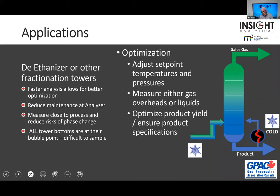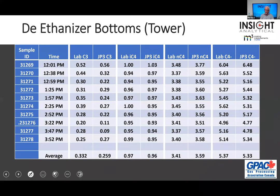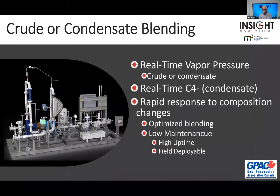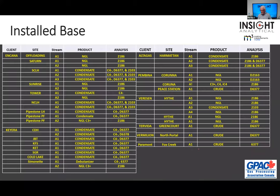The same approach works for de-ethanizers — we want to adjust recirculation rates and hit a C2 to C3 ratio. For de-ethanizers or any frac tower, we control recirc rates and temperatures. Looking at results on the de-ethanizer bottoms: lab result 0.33 versus infrared analyzer 0.26; lab 0.97 versus infrared 0.96 on iC4; nC4 is 3.41 lab to 3.6 infrared. The lab C4 minus and the analyzer C4 minus are almost the same. We can also use this for crude and condensate blending — vapor pressure and condensate quality. Due to time I'll move quickly, but happy to go back on any questions.